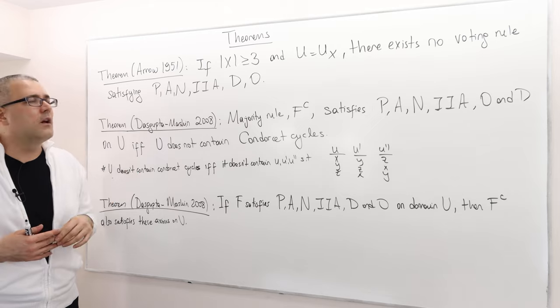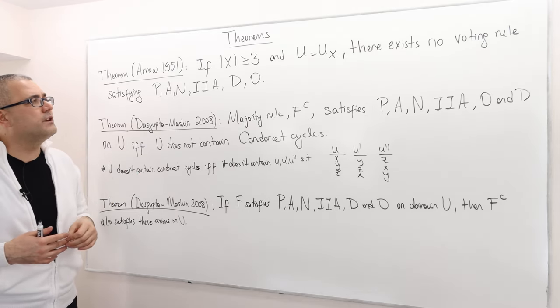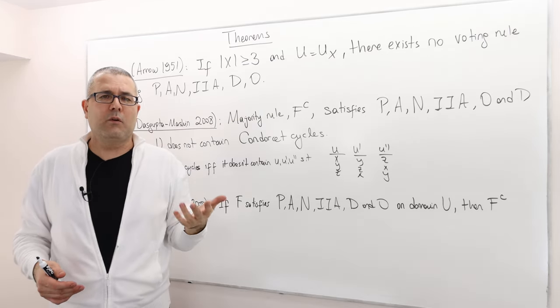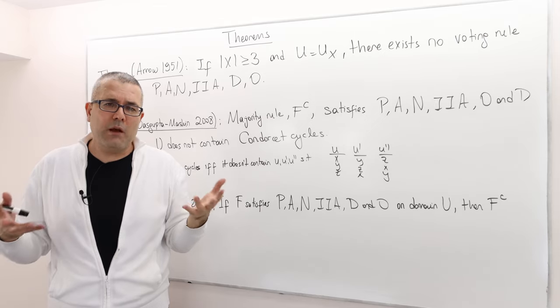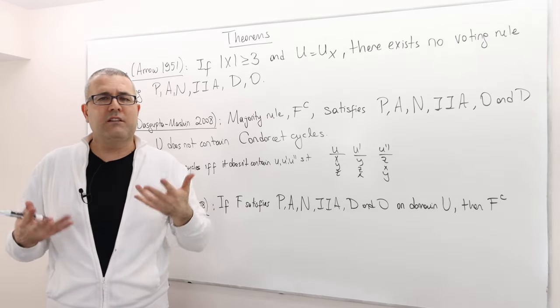That's one way or one direction of research. Another direction of research is: why do we really care about the entire unrestricted domain of preferences? For some problems we know that all preferences are not really possible.